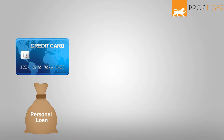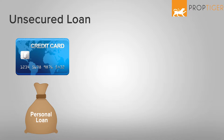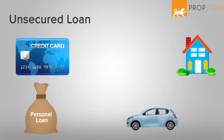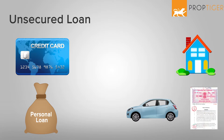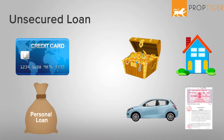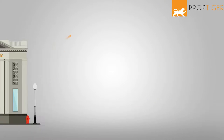Typically, credit cards and personal loans are considered unsecured loans, while home loans, automobile loans, and loans against property or jewellery come under secured loans.